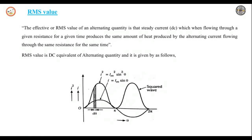Let us discuss about RMS value and why this RMS value is introduced in AC. RMS value means it is also called as the effective value. The RMS value of an alternating quantity is defined with respect to AC.